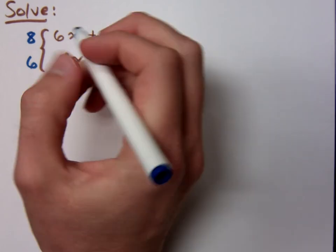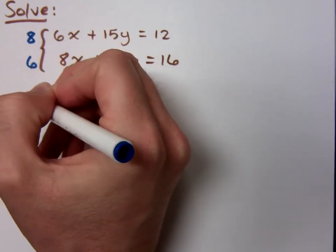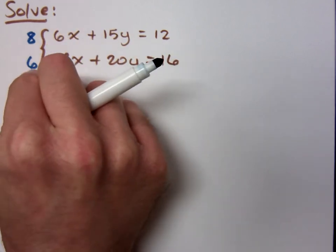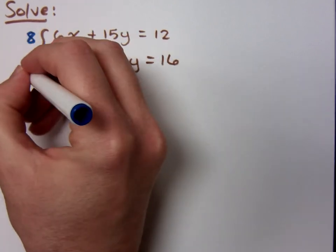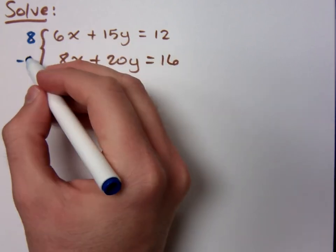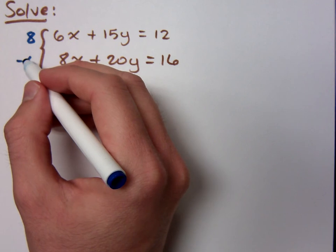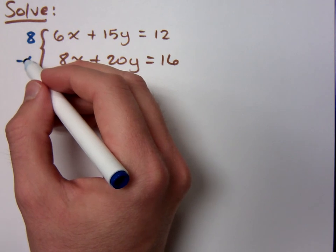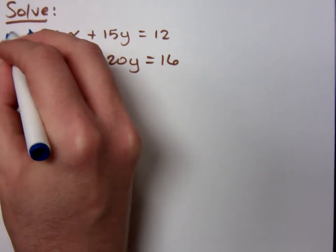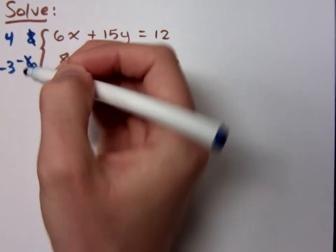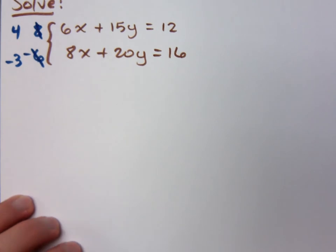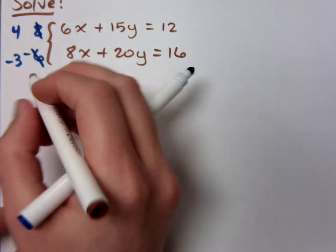All right. Now, if I do 8 and 6, one of these guys is going to have to be negative. Do you know why? Because that's 48 and 48. I need something to cancel. But I don't want to use 8 and 6. Do you know why? 8 and 6 have a common factor. What's a common factor? So I can actually use smaller numbers here. I can use 4 and negative 3. You don't have to, but it makes the numbers a little bit smaller and easier to work with.